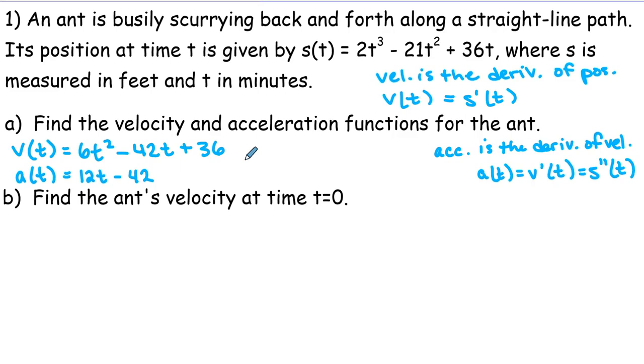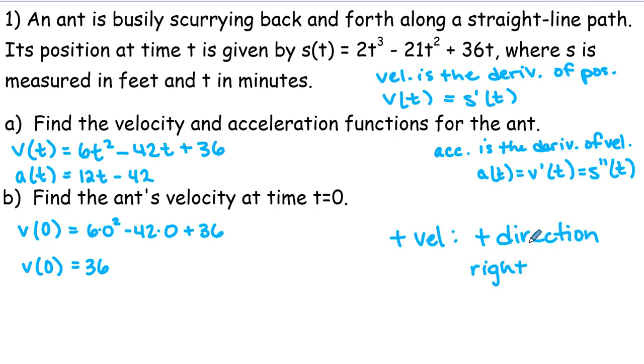Part B. Find the ant's velocity at time t = 0. So we can just take the equation for velocity that we found in part A and substitute 0 in there and we get 36. Okay, notice that that's a positive value. And if a velocity is positive, it means you're going in the positive direction. Positive velocity, positive direction. Okay, if the line was left and right, then that means we're going to the right. Or if the line is vertical, up and down, that means we're going up. So we would consider the right the positive direction or up the positive direction. We don't really know for this line. I'm also going to put units on here so that was 36 feet per minute. The units were minutes.